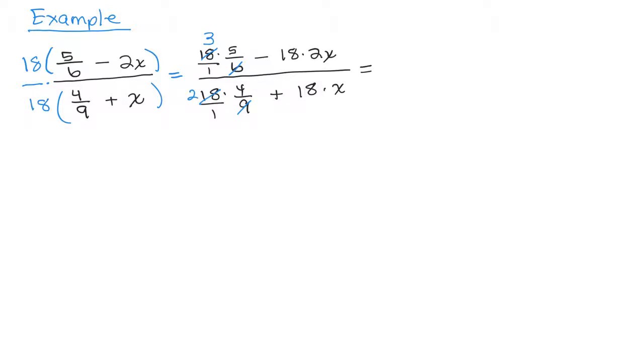So there's no fractions over here for 18 times 2x or 18 times x. So there's nothing to cancel. You're just going to be multiplying. So 3 times 5 is 15.